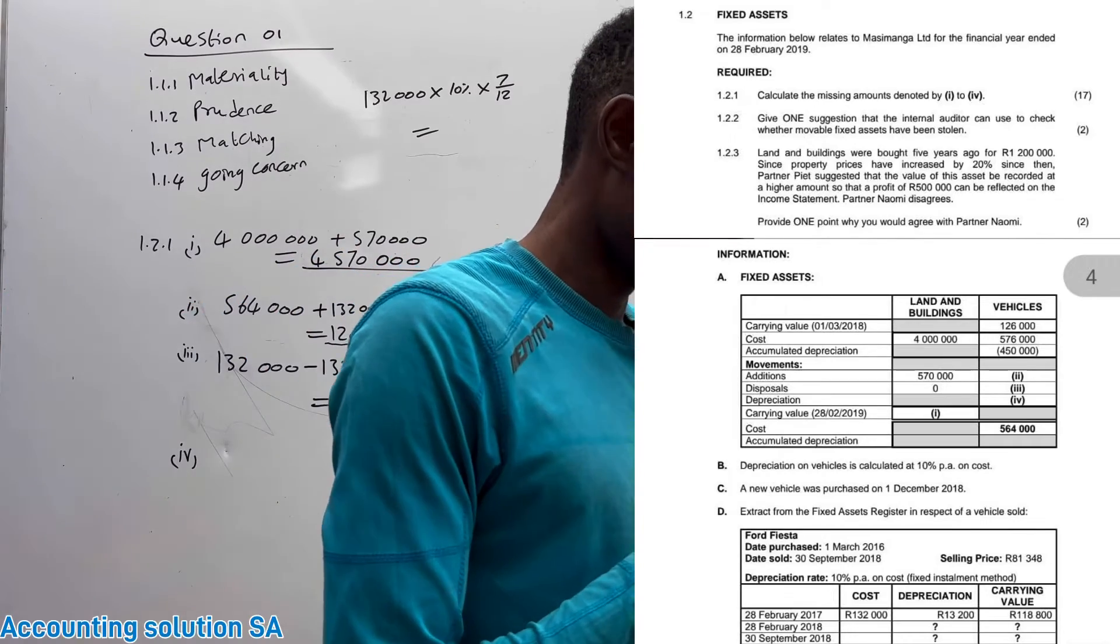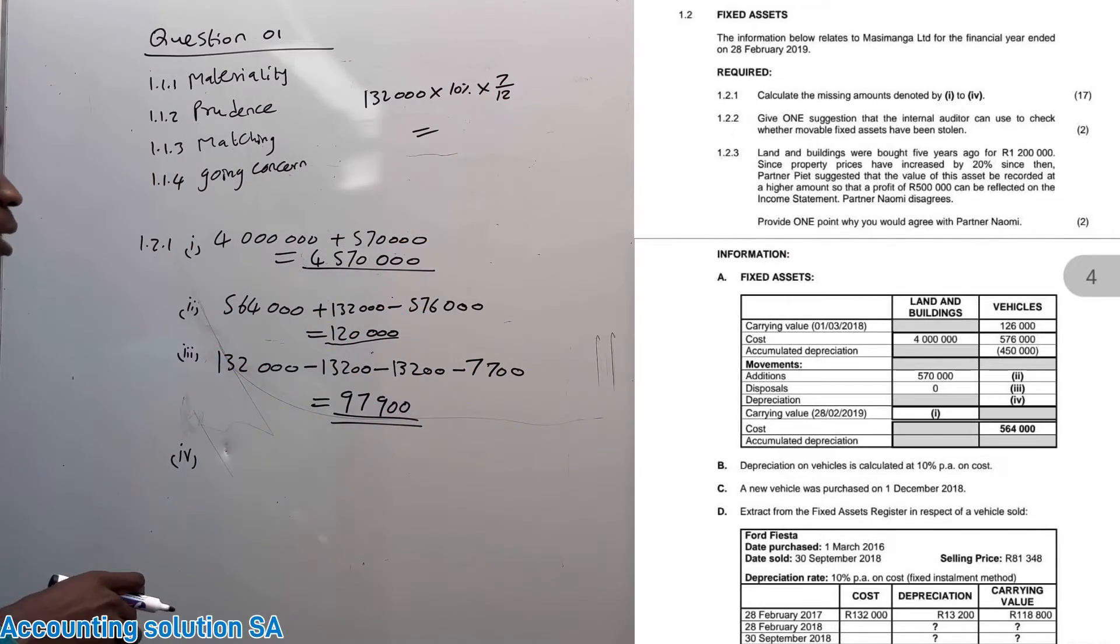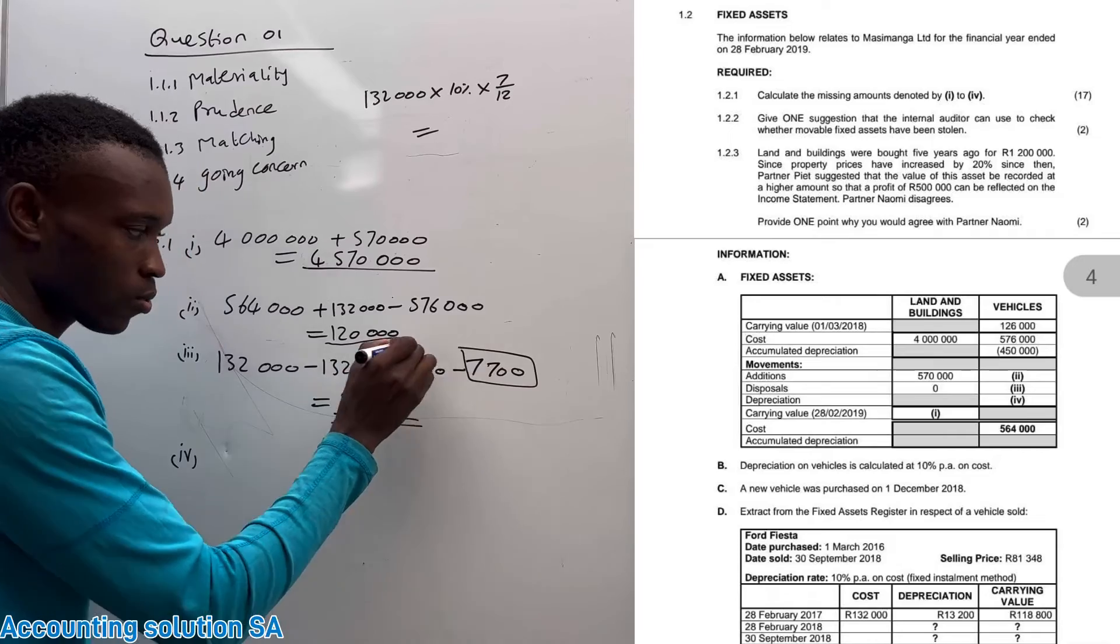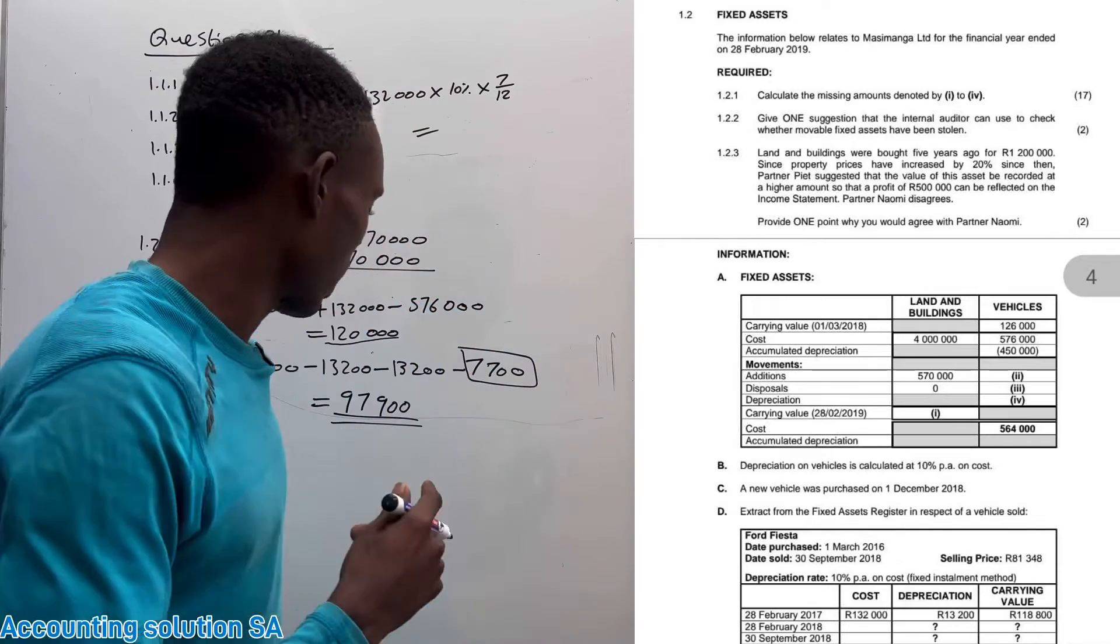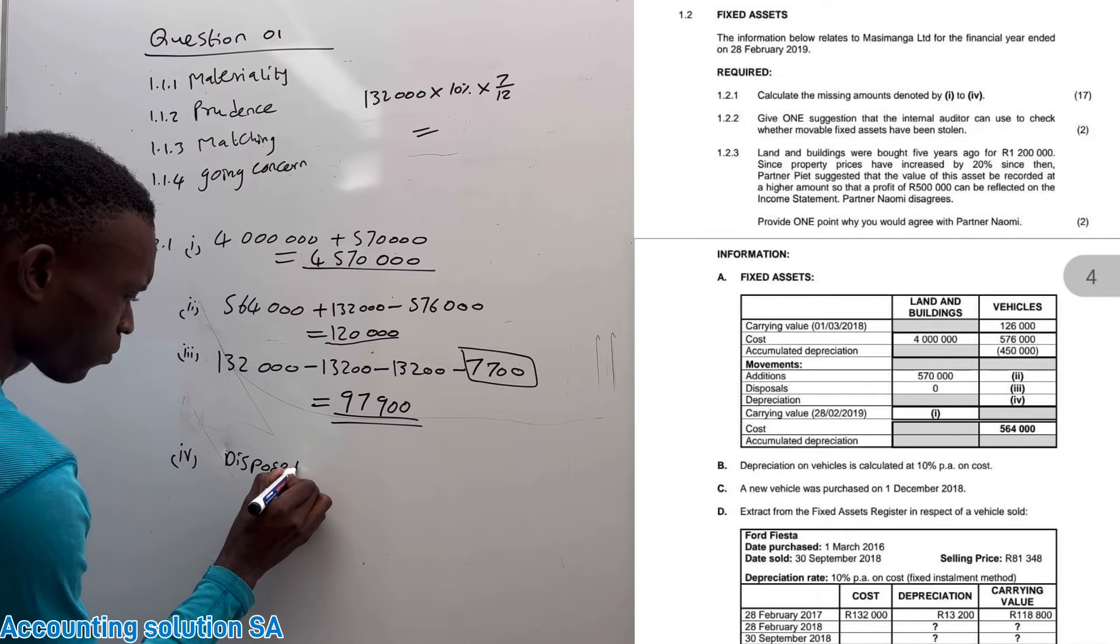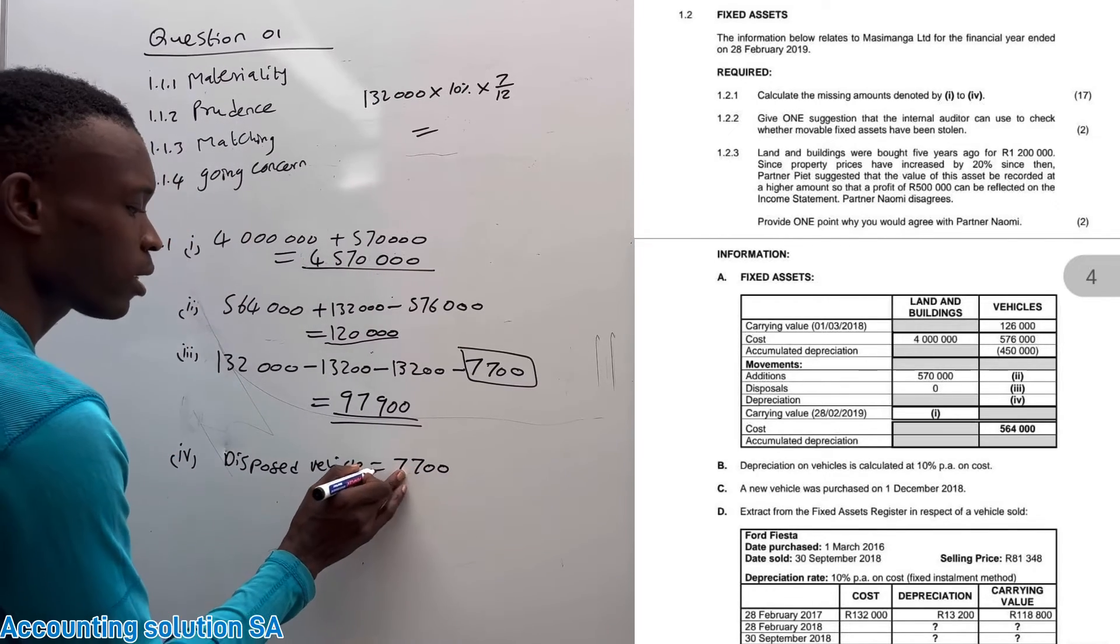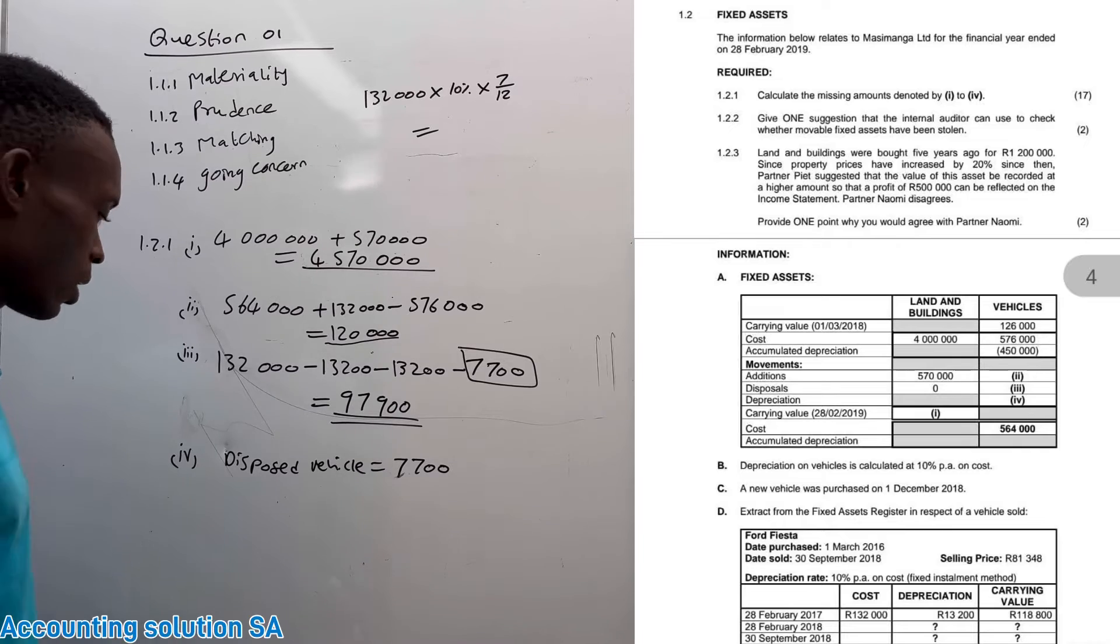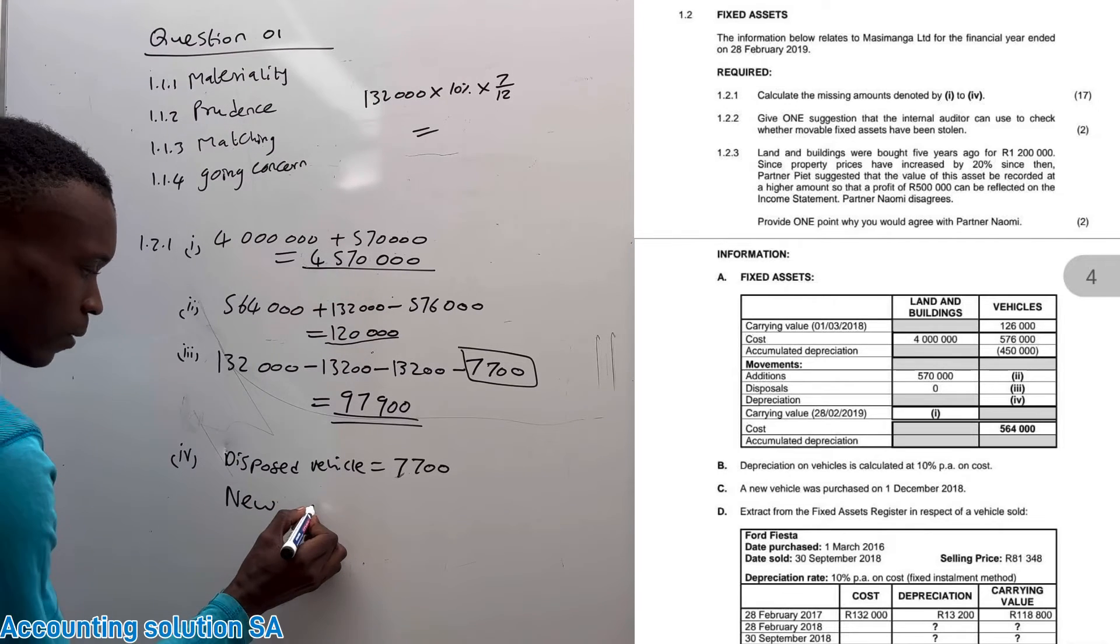We need to calculate depreciation, roman figure number five. We need to calculate depreciation for this year only. All the other ones are old, only this one is for current year. Under depreciation we calculate only for the current year, which means that for disposed vehicle we already have it. For this year it's R7,700, we didn't use the whole year, we only use seven months, that's why we only have R7,700 rather than R13,200.